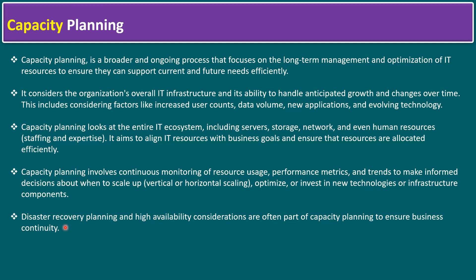Additionally, disaster recovery planning and high availability considerations are often part of capacity planning to ensure business continuity. If we increase server count on the production site, during disaster recovery exercises every six or twelve months, our capacity management tool helps determine whether the secondary site can manage the equivalent workload. Some organizations maintain active-active sites; others maintain active-passive standby sites, activating the secondary only when a disaster occurs on the primary. We need to do capacity planning on both sites accordingly.